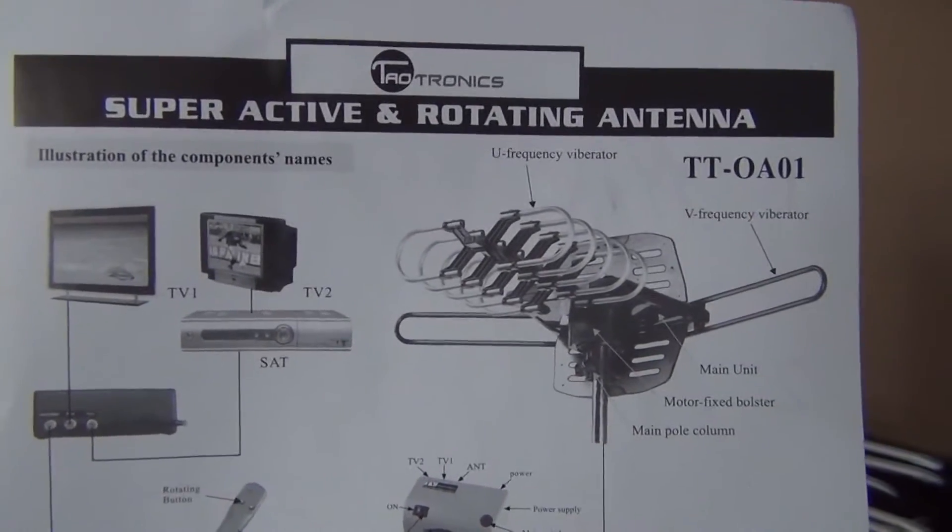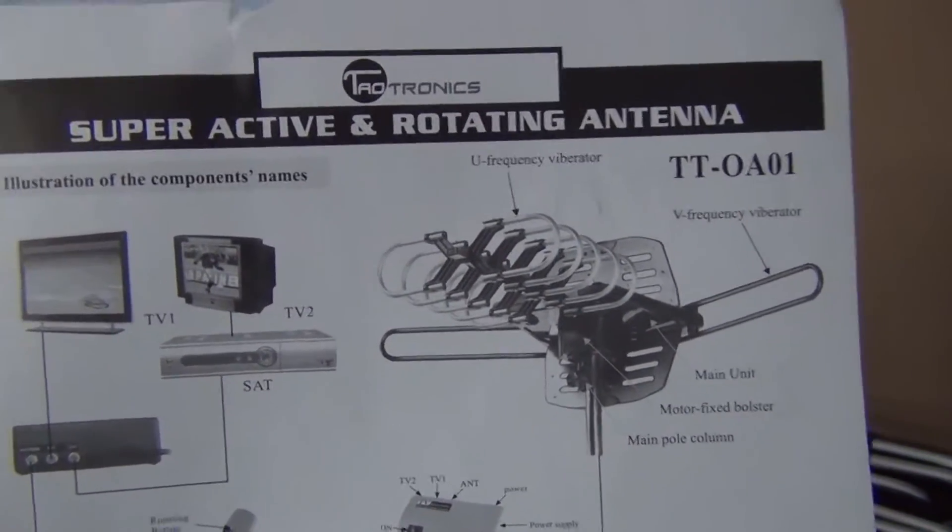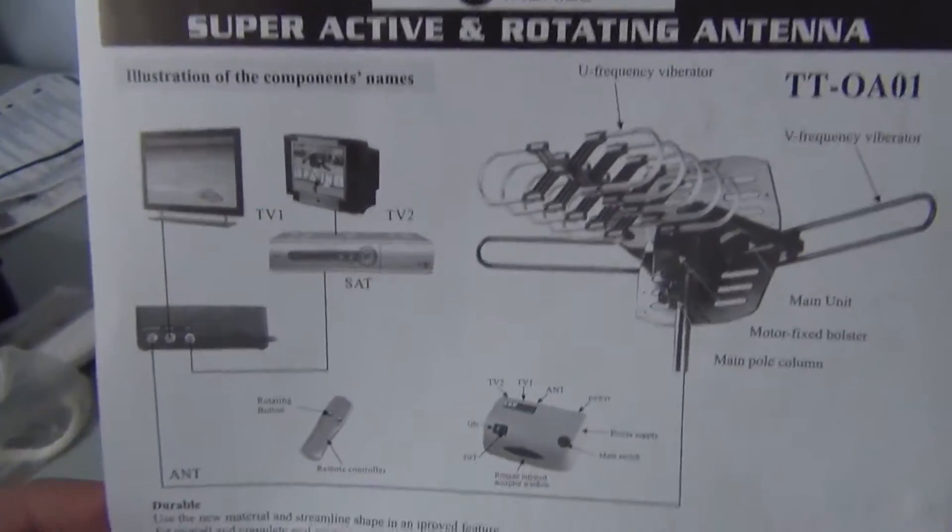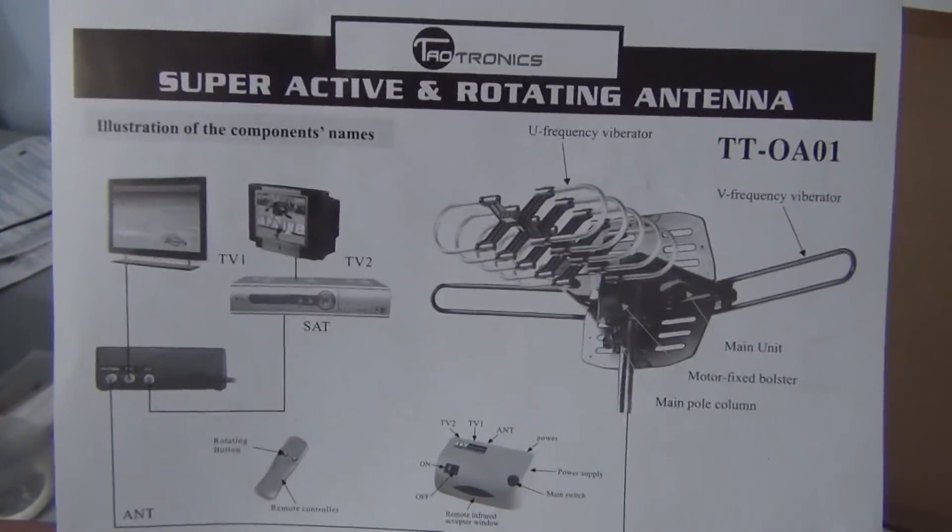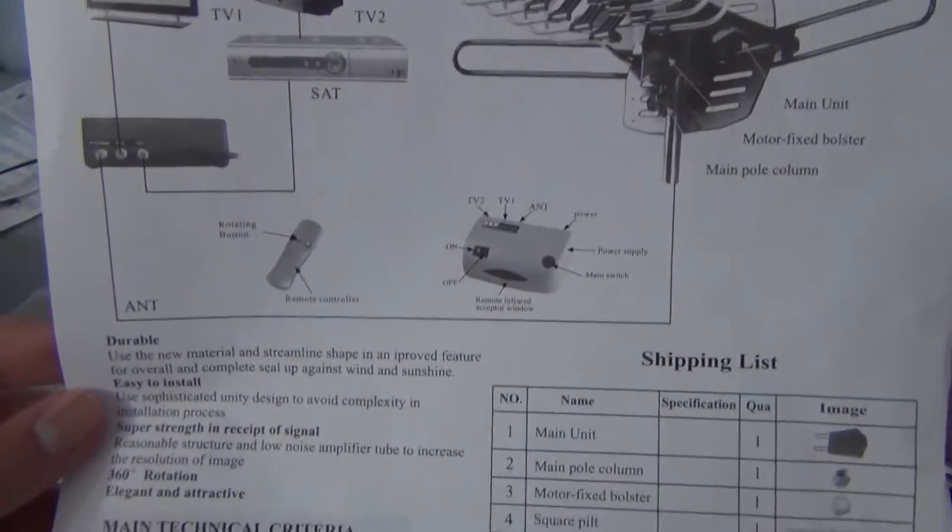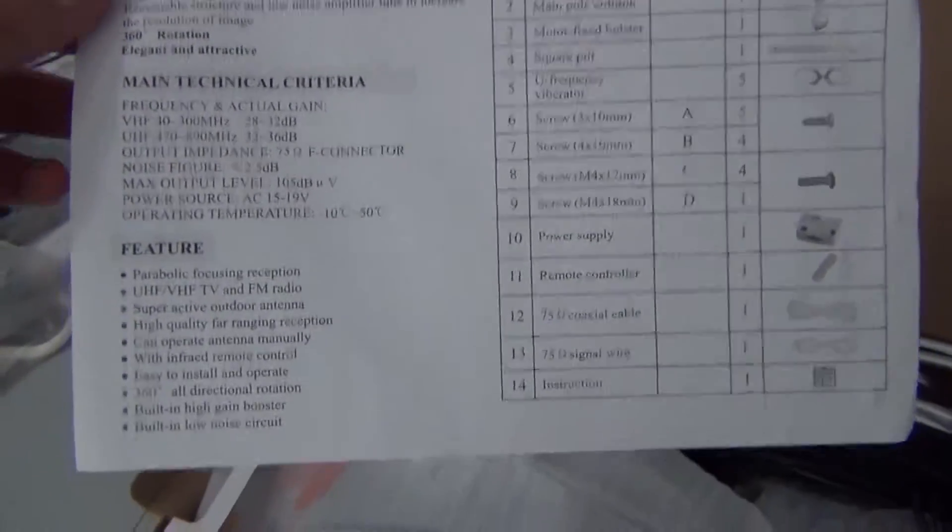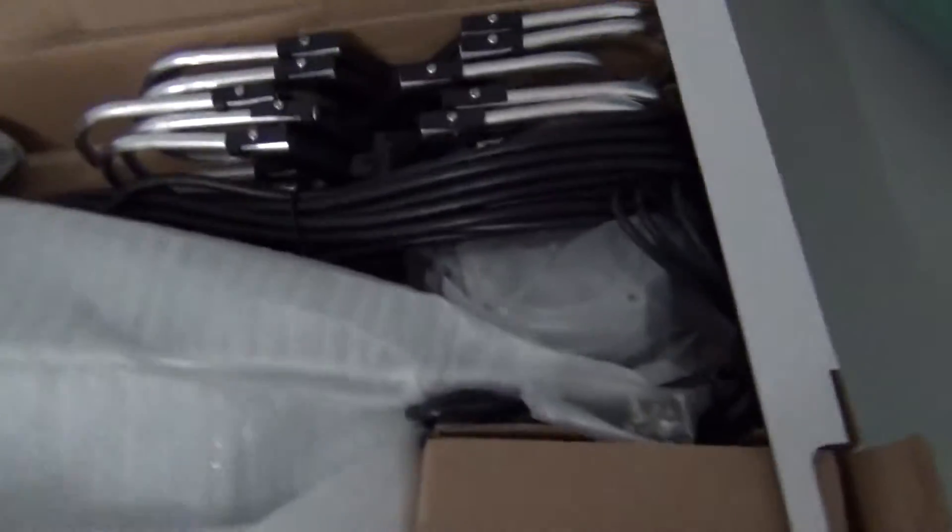There's the quick look. It's model TT-OA01. There it is right there. Shipping list. And there's the quick install instructions. That document can be found on the Amazon page in case you need it. This is probably the infrared box.